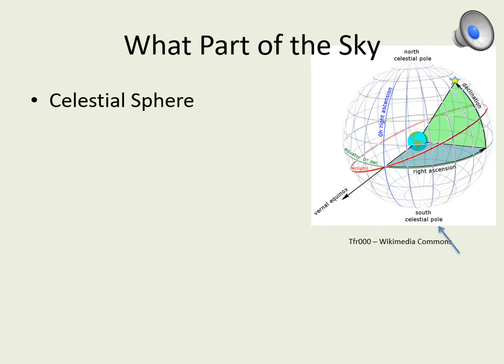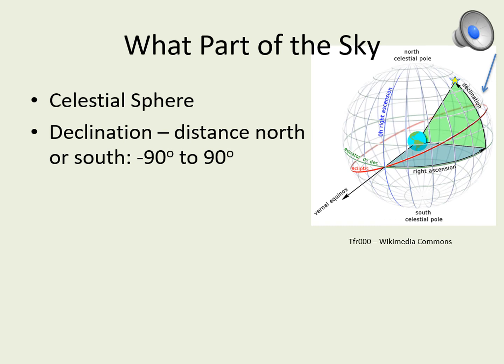A third important marker is the Celestial Equator. This line lies right over the Earth's equator. Declination is the way we define how far north and south of the Celestial Equator a star is. Declination can have values ranging from plus 90 degrees to minus 90 degrees. Plus 90 degrees means the star is at the North Celestial Pole. At minus 90 degrees, the star is at the South Celestial Pole. A star at zero degrees declination is right over the Earth's equator.